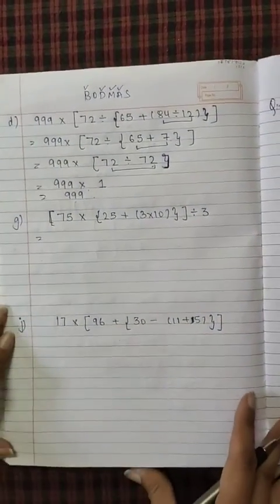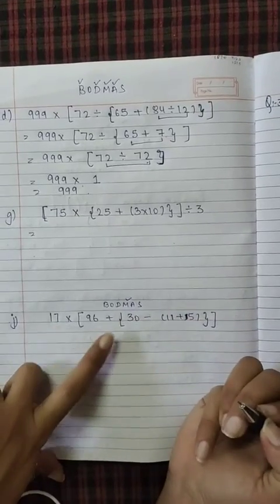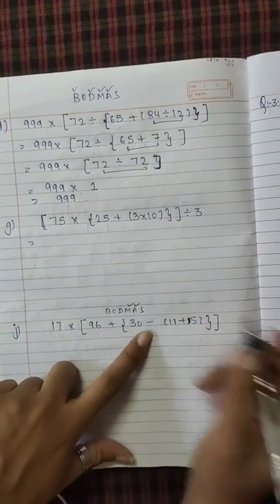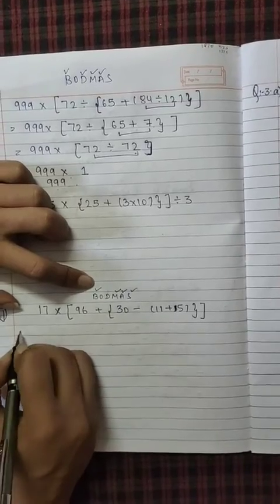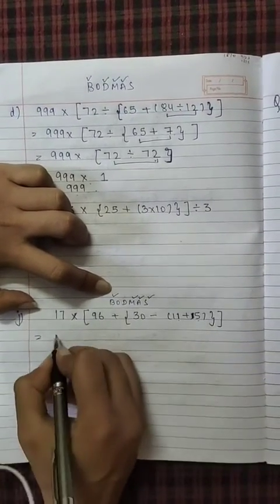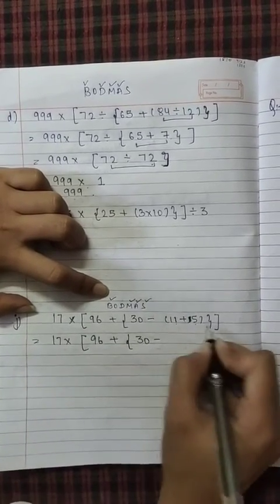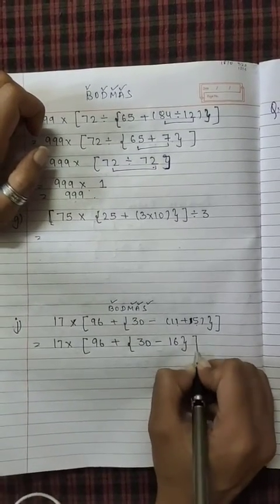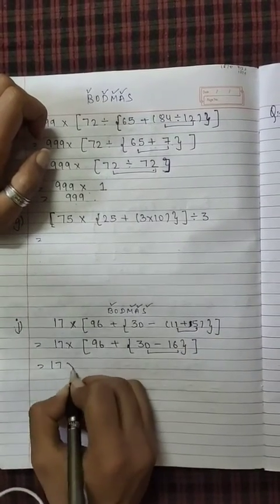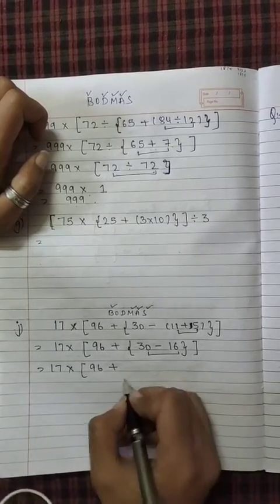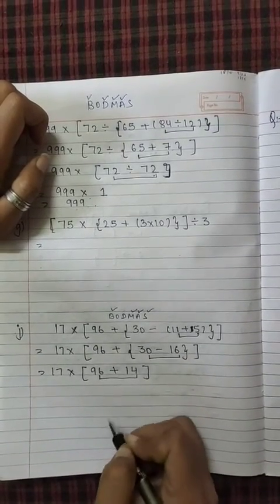This again, J part I will do for you. Again BODMAS we have written. First we have multiplication, then here is addition, then subtraction and brackets. Means first we will solve what? Brackets. So in the bracket, round bracket first. The whole question as it is. 30 minus 11 plus 5 is what? 16. Next is the turn of which bracket? Curly bracket. So 96. 30 minus 16 is what? 14.